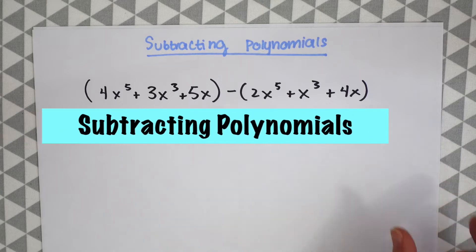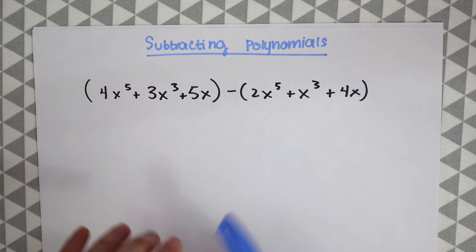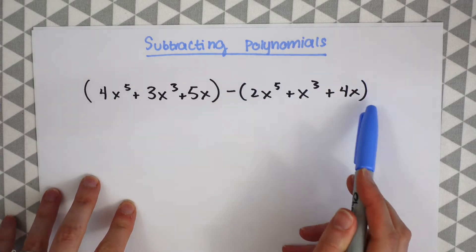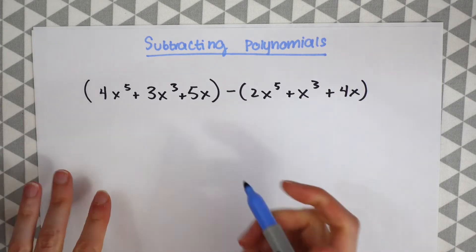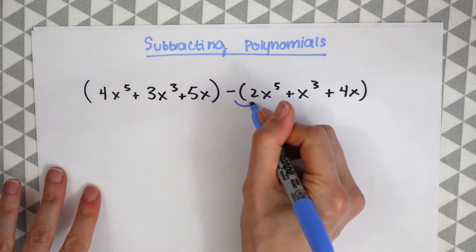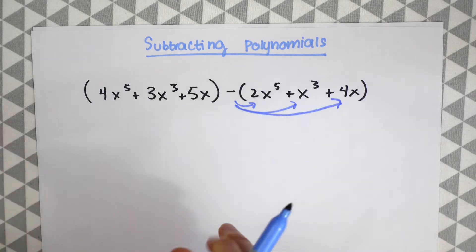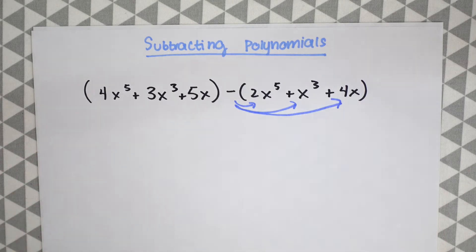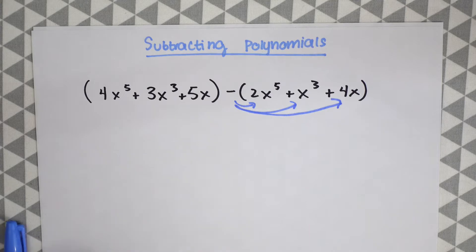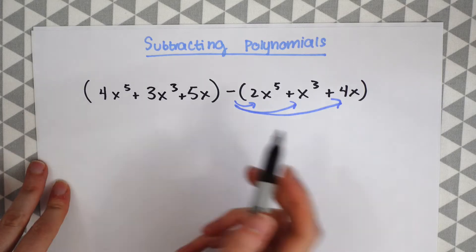Now we're going to do the same thing but we're going to be subtracting polynomials. For subtracting polynomials like this when they're in parentheses, the first thing we're going to want to do is actually rewrite this whole expression because we're going to need to distribute this minus sign. So everything that's positive is going to become negative and vice versa. So let's write out this whole expression again, now taking away the parentheses. So this first half is going to stay the same.